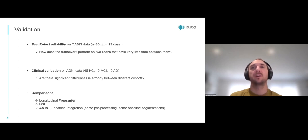We're comparing our method against the latest version of longitudinal FreeSurfer, against BSI in all three regions, and against ANTs plus Jacobian, a framework that includes the exact same preprocessing as ours, using ANTs-SyN as the non-linear registration part, and then Jacobian integration using the exact same baseline segmentations to calculate atrophy.